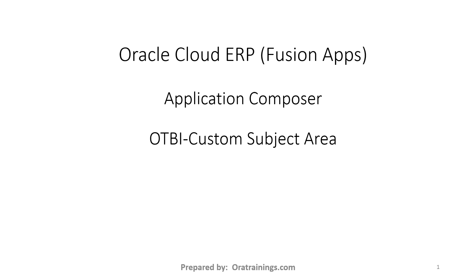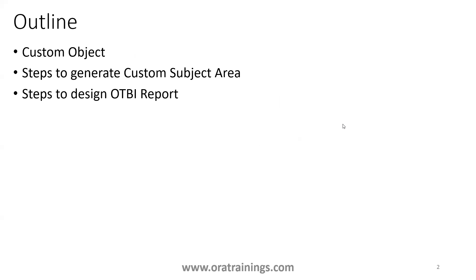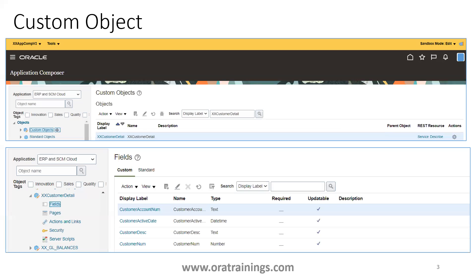Welcome to orotrainers.com. In this session we'll discuss custom subject areas in Application Composer. The agenda covers three things: the custom object, the steps involved to create a custom subject area, and the steps involved to design an OTBI report. We will not discuss how to create a custom object, but will look at an existing one. For how to create a custom object, see the earlier presentations on Application Composer.